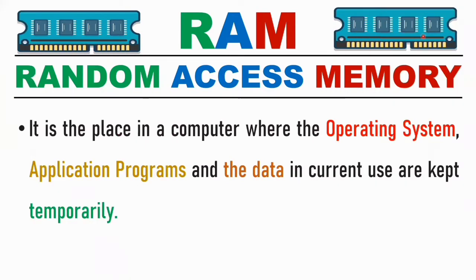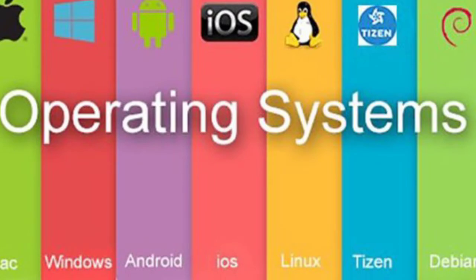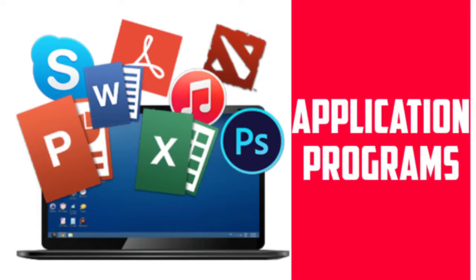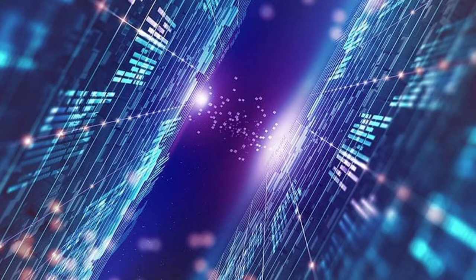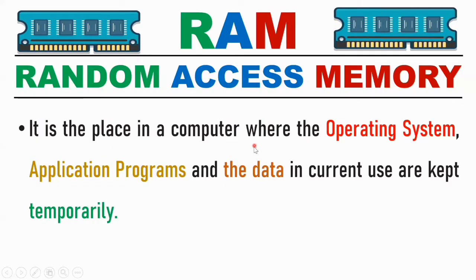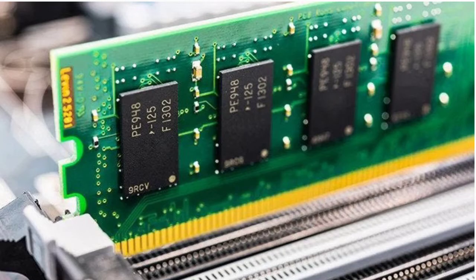RAM is the place in the computer where the operating system, application programs, and data currently in use are kept temporarily. The operating system, application programs, and data are temporarily stored in RAM.